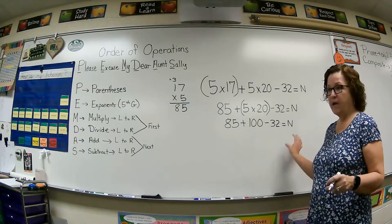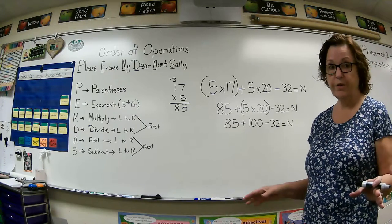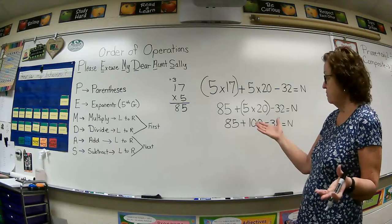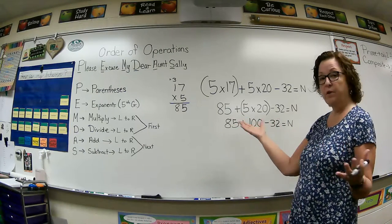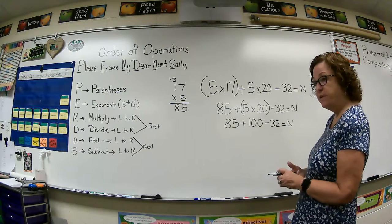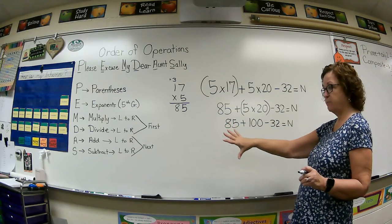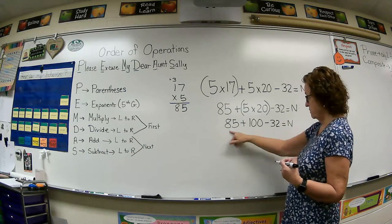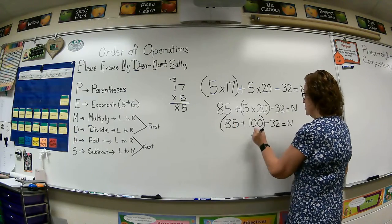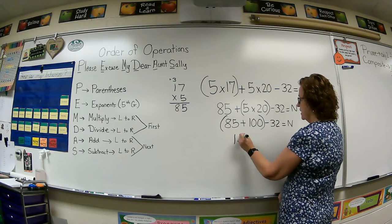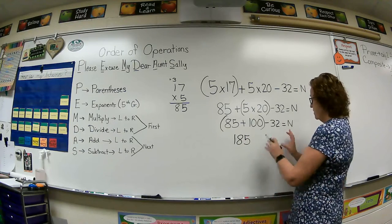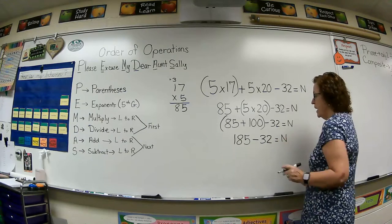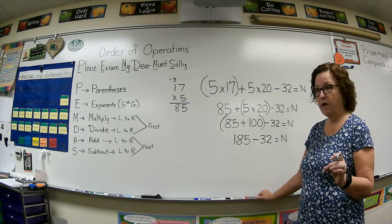Now I can bring down this part. 85 plus 100 minus 32 equals N. Now we have to look at this as a brand new equation also. And so according to my order of operations, there's no parentheses. So multiply or divide. Oh, I don't have any multiplication. I don't have any division. So next we're going to look at adding and subtracting from left to right. Doesn't matter if there was subtraction first, we could do that. Happens to be adding first. So let's put parentheses around that. 85 plus 100. That's pretty easy to do in our head. 185. And then we bring down the rest of our equation that we're still working on.